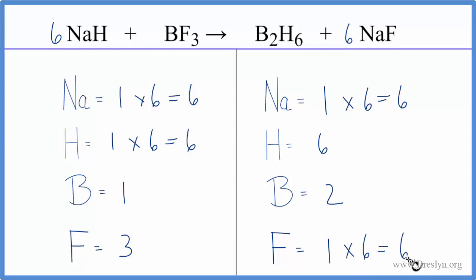That's not too big of a deal because if we put a two in front of the BF3, the one times the two, that'll give us two boron atoms and those are balanced, and then three times two, that'll give us six fluorine atoms, and we're done.